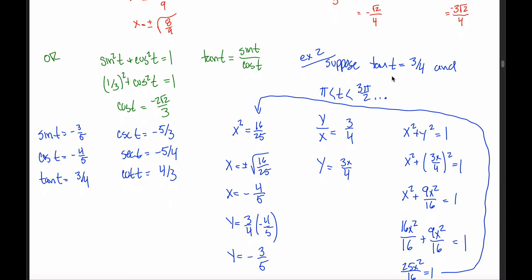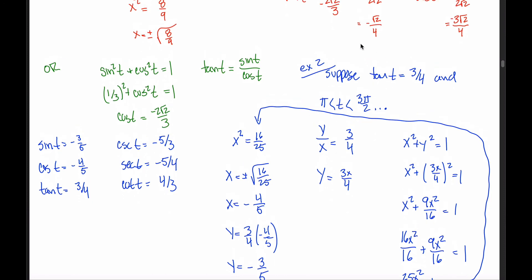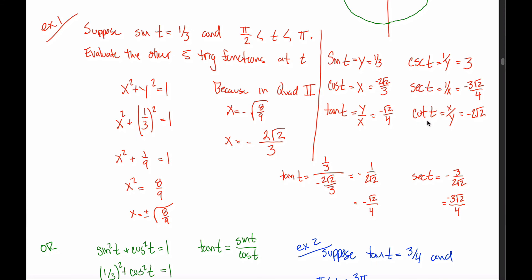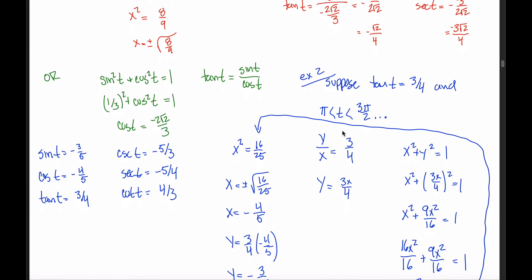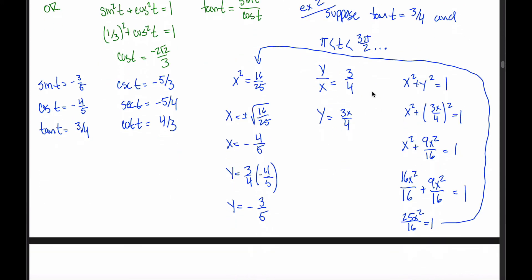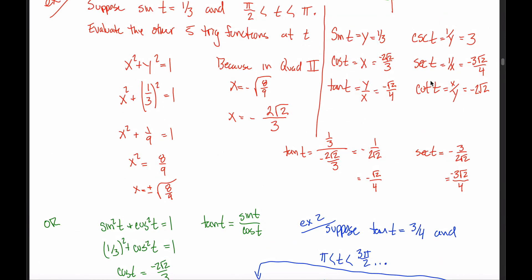The key takeaway from this video: if you're told any one of the six trig functions — sine, cosine, tangent, cosecant, secant, or cotangent — and the quadrant, you should be able to find the other five. If given sine, cosine, cosecant, or secant, it's easier because you directly know either x or y. If given tangent or cotangent, it's harder because they involve the ratio of both x and y. In that case, use the substitution trick: solve one equation for one variable and plug it into the other to reduce to a single-variable equation. Once you have x and y, it's just plugging in numbers.